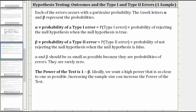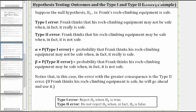Now let's take a look at some examples. For the first example, suppose the null hypothesis is: Frank's rock climbing equipment is safe. The type one error would be the decision to reject the null hypothesis when the null hypothesis is true. So in this situation, the type one error would be: Frank thinks that his rock climbing equipment may not be safe when in fact it really is safe.